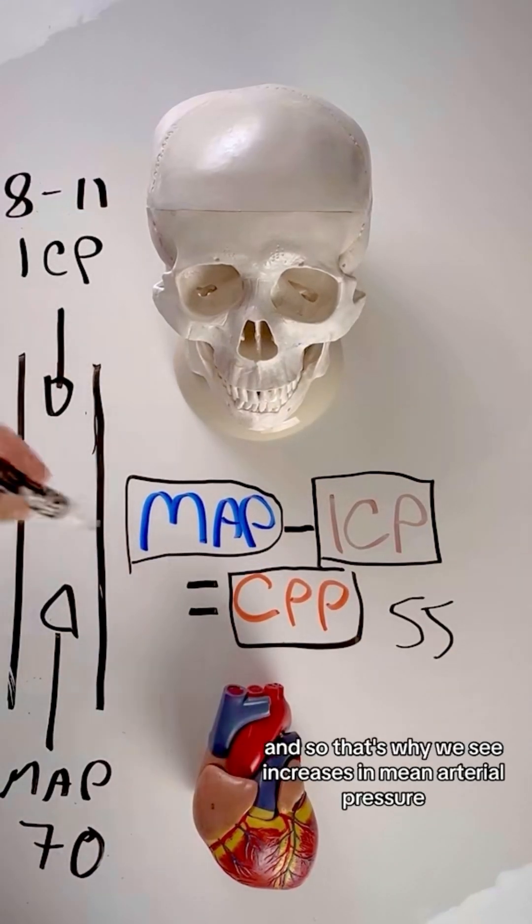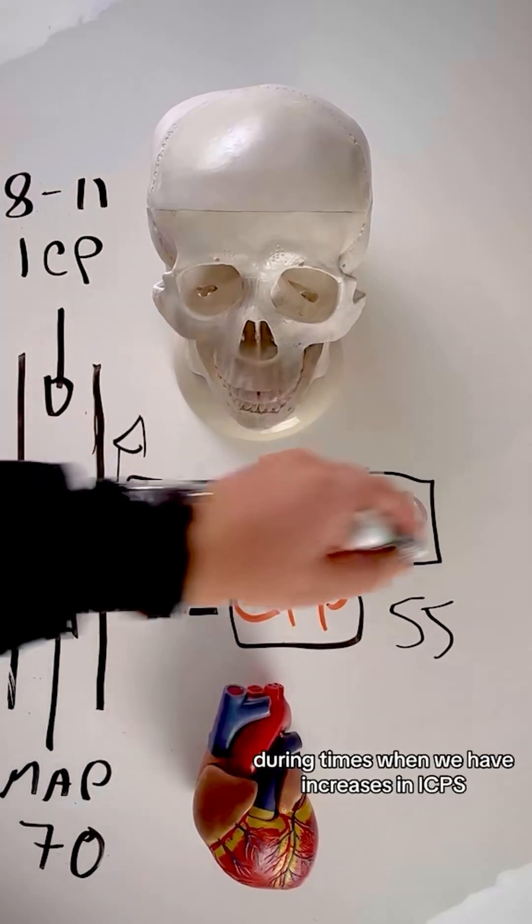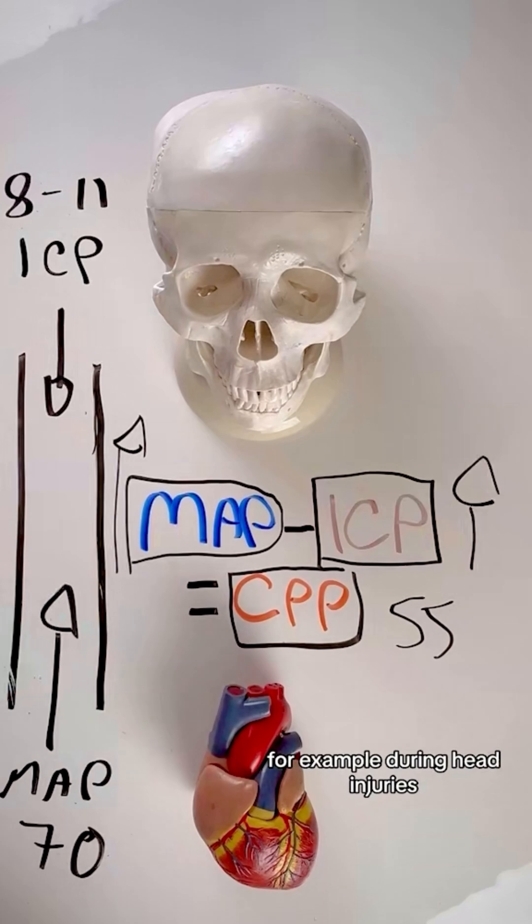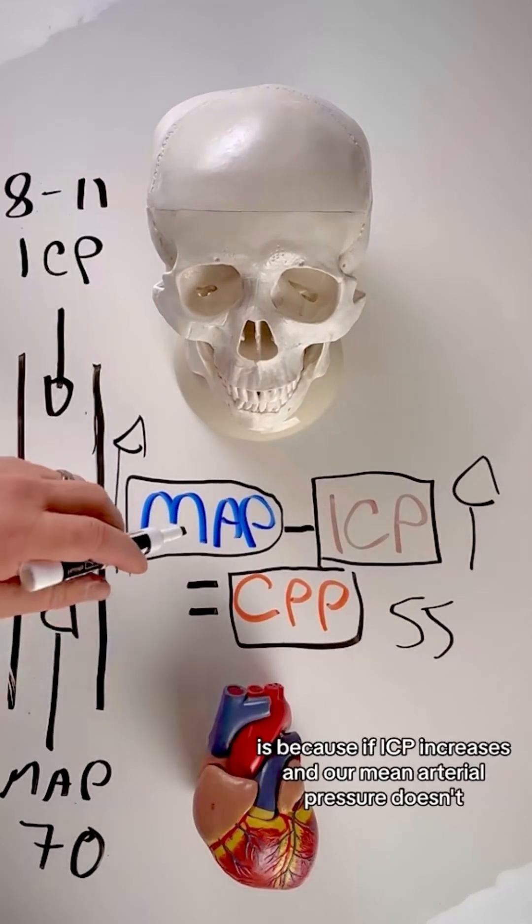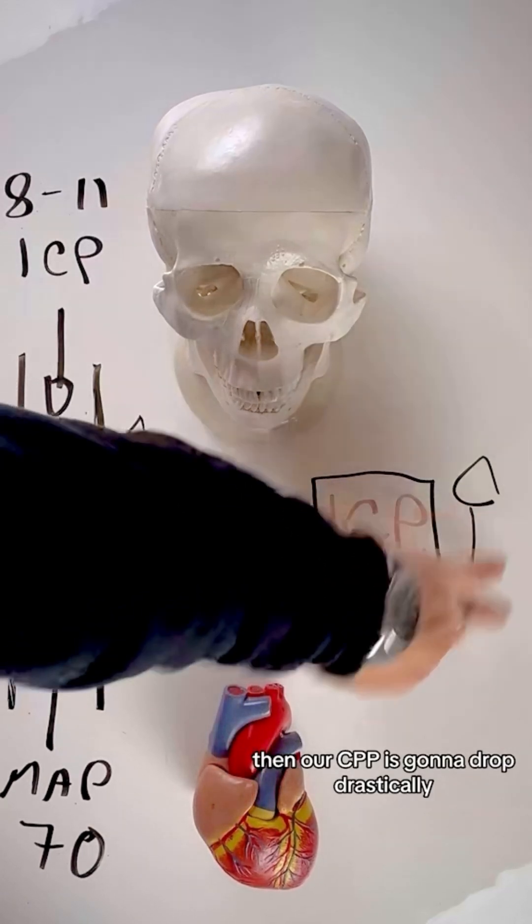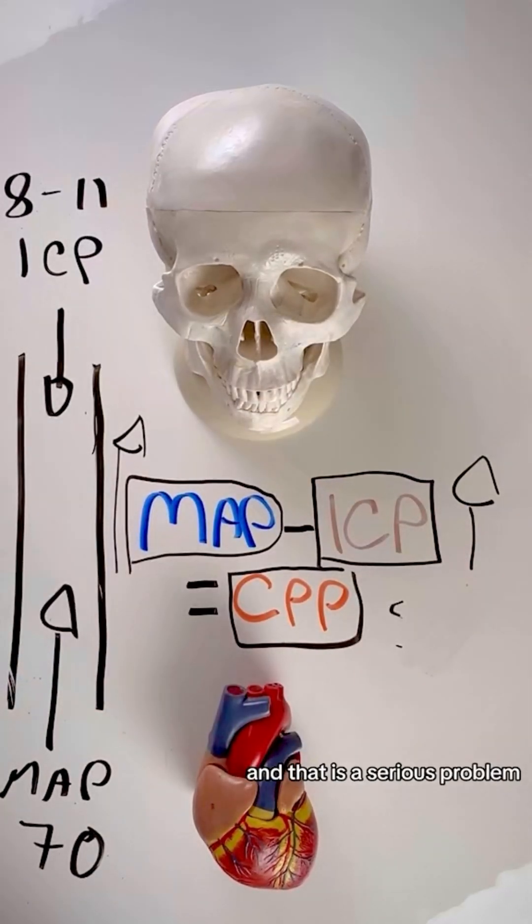And that's why we see increases in mean arterial pressure during times when we have increases in ICP, for example, during head injuries. It's because if ICP increases and our mean arterial pressure doesn't, then our CPP is going to drop drastically. And that is a serious problem.